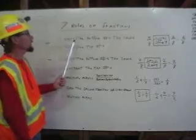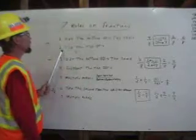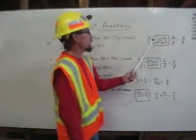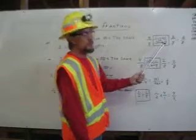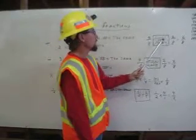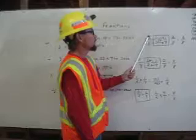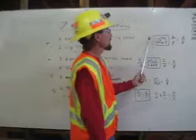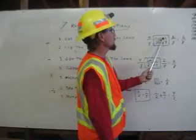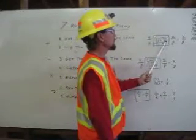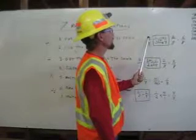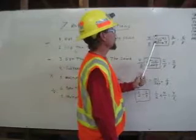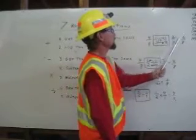Rule number one: get the bottom numbers the same. And number two: add the top numbers. As you can see, one-half plus one-fourth — the bottom numbers aren't the same. So we take four times one is four, four times two is eight. And we move this over: two times one is two, two times four is eight. Add the top numbers: four plus two equals six. Bring the eight over. One-half plus one-fourth equals six-eighths.